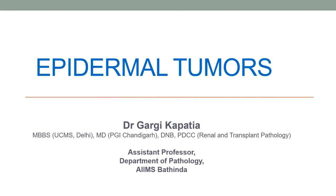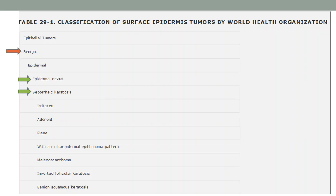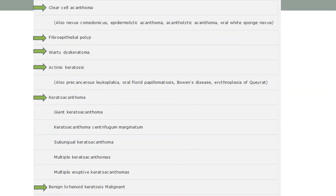Good morning everyone. Today's topic for discussion is Epidermal Tumors. I will be covering both benign as well as malignant epidermal tumors. According to the WHO, epithelial tumors can be divided into benign and malignant tumors. The benign tumors comprise epidermal tumors including seborrheic keratoma, clear cell acanthoma — also known as Naevus chromatinicus — epidermolytic acanthoma, acantholytic acanthoma, oral white sponge nevus, fibroepithelial polyp, warty dyskeratoma, actinic keratosis, keratoacanthoma and benign lichenoid keratosis.